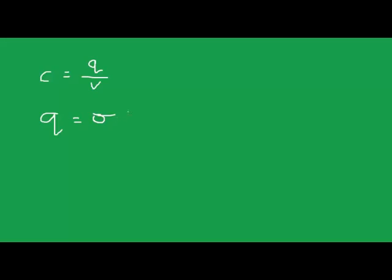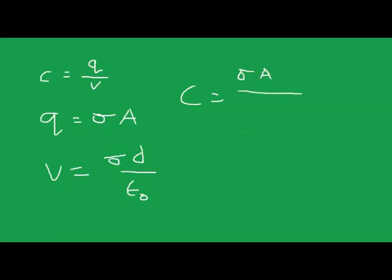Now substituting into C equals Q over V: Q equals sigma times A (the surface charge density times the area), and V equals sigma d over epsilon naught. So C equals sigma A divided by sigma d over epsilon naught. The sigma cancels, giving the capacitance C equals epsilon naught times A divided by d.